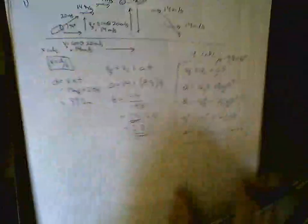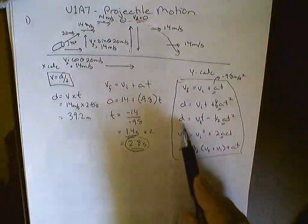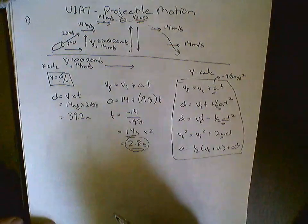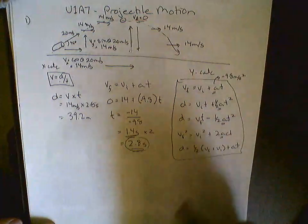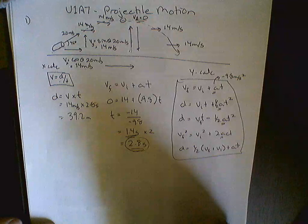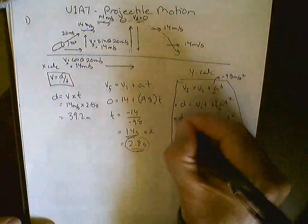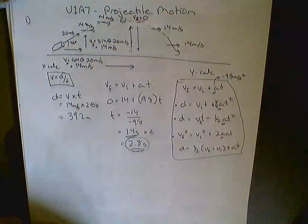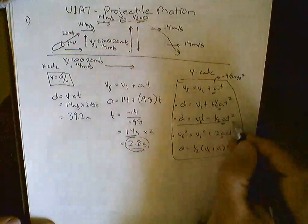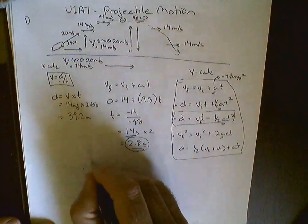Now if we wanted to know how high it went, that would be this D value right here. So we've got a few calculations here that we can use to find D. We can use any number of calculations here to find this. We could use this one, this one, and this one, and they're all going to give us the same answer. I'm going to use this second calculation right here to find out how high this went.